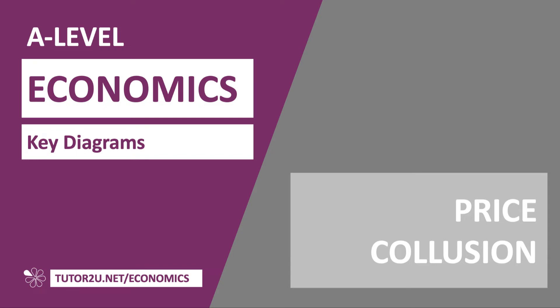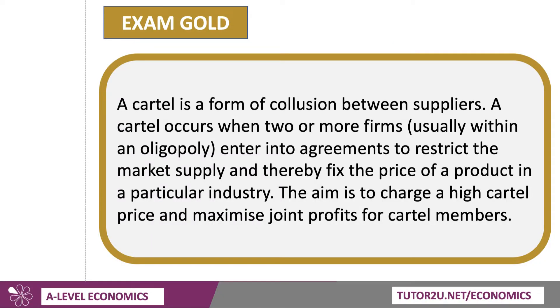The next video in our series working through some of the key tricky diagrams for A-level economics looks at price collusion. Price collusion, or cartel behavior, is when producers or suppliers in a market come together to enter into an agreement to restrict the market supply and thereby fix — normally at a high level — the price of a product in a particular industry.